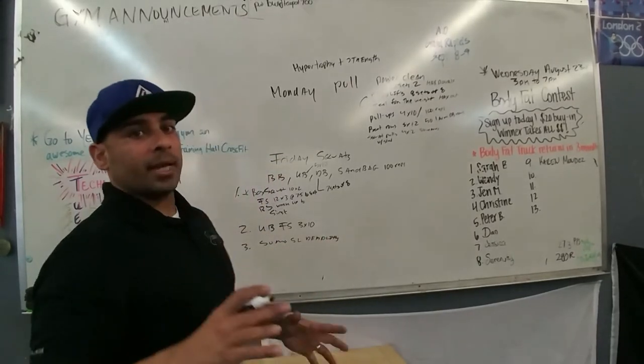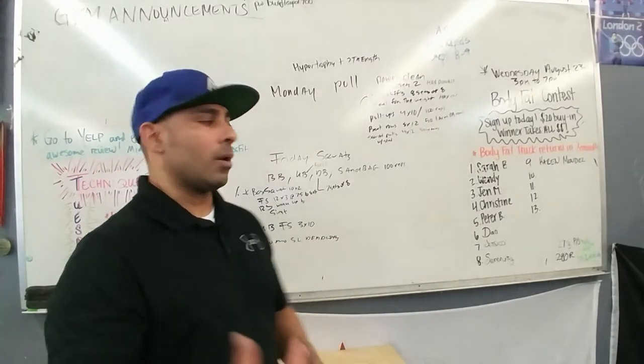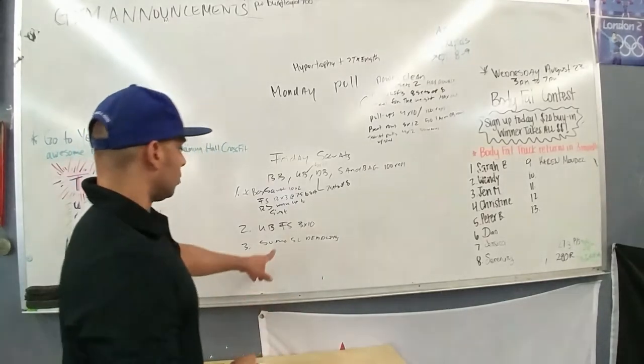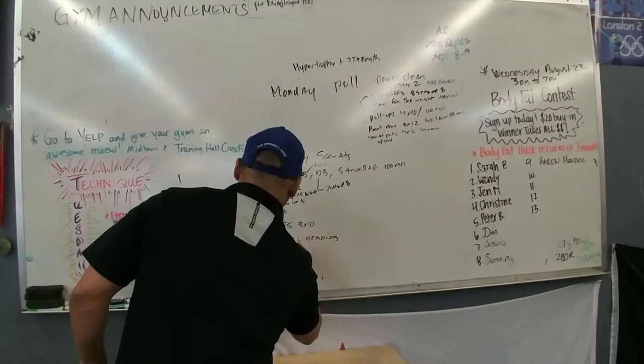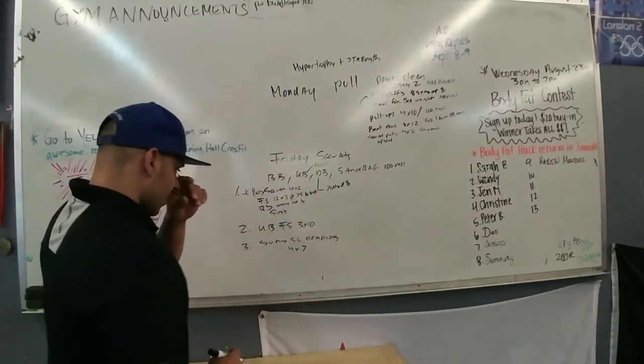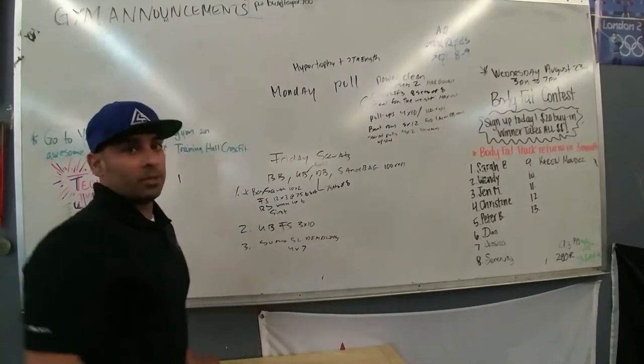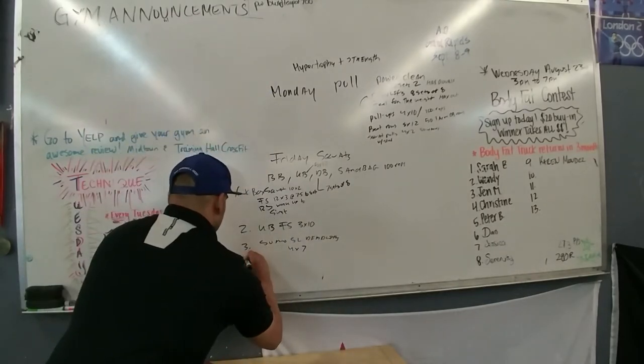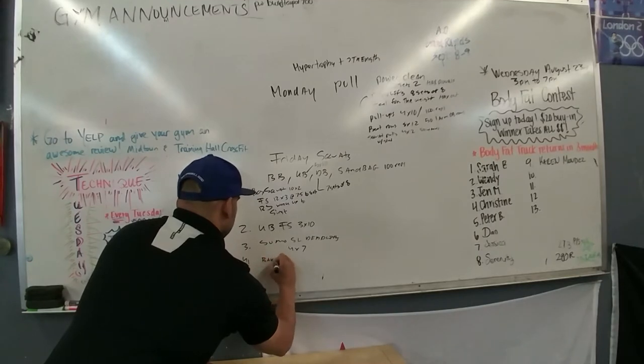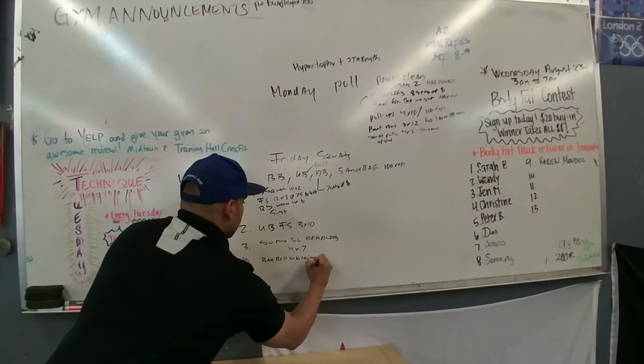Because I really like to work the glutes and hamstrings. It's a great way to develop your core and get crazy strong. So sumo deadlift. Maybe 4 sets of 7. All right? From there, we're going to do some unilateral work right there. So 4. Maybe barbell walking lunges.